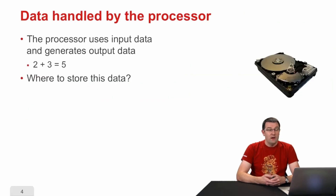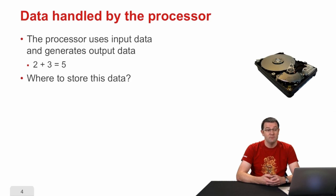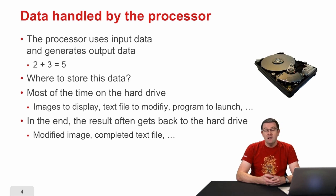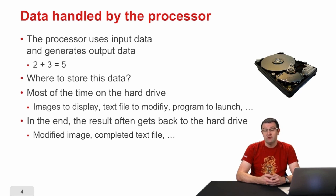When performing calculations, the processor manipulates data. It will have to perform operations by entering data and producing an outgoing result. If you ask it to add 2 and 3, it's going to search for 2 and 3 in the memory and write the result, 5, in the memory. The question is: where is that data stored? Generally, when launching a program, the data are stored on the hard drive — for example, an image you want to display on the screen, some text you want to modify, a program you want to launch.